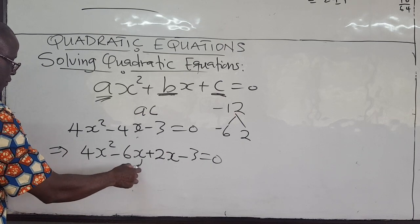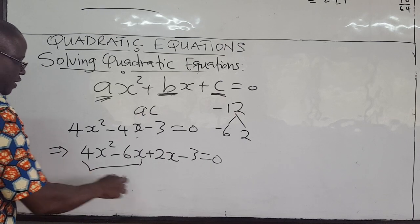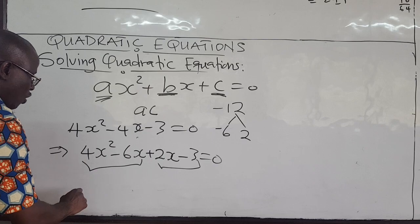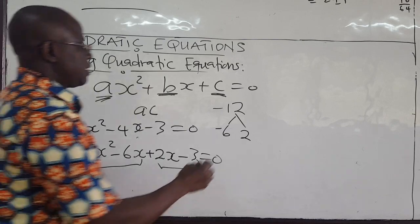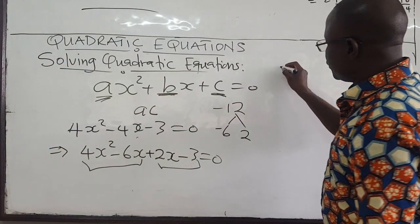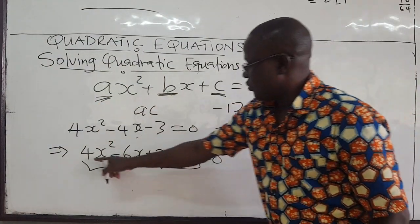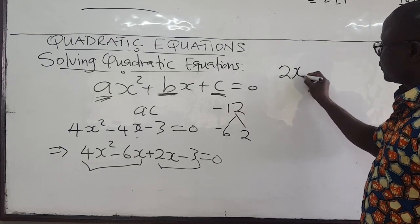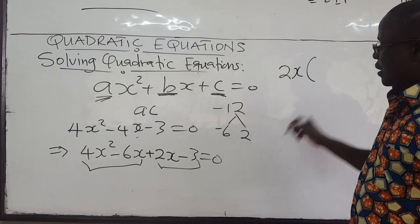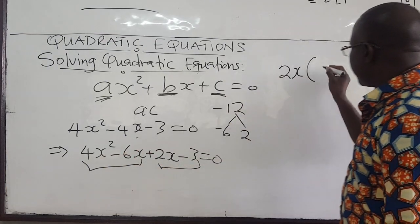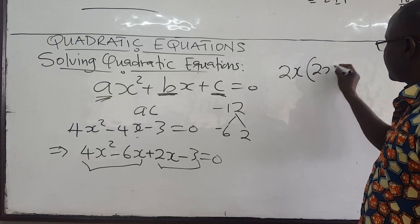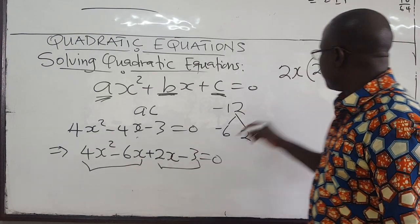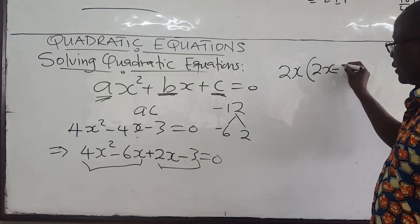Then you group them and factorize each group. From the first group, 2x is common, so you pull 2x out, and you have 2x remaining. From the second group, 2 goes out and you have 3 remaining, so minus 3.